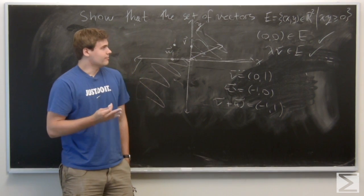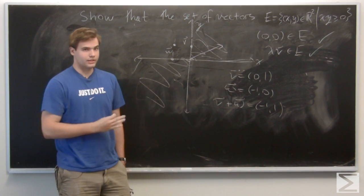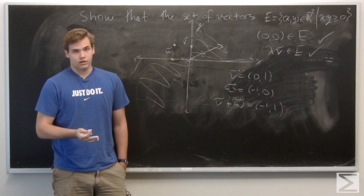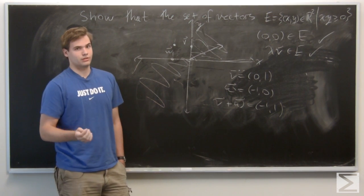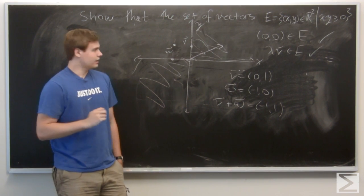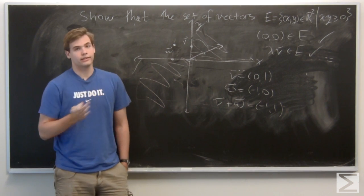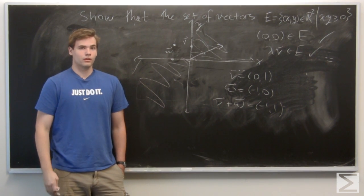So that shows everything we wanted to see: that it's not closed under vector addition, but is closed under scalar multiplication and contains the zero vector. And thus, E is not a linear subspace of R². And we're done.